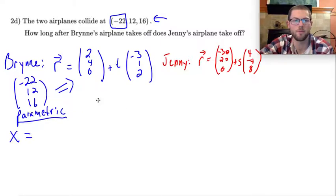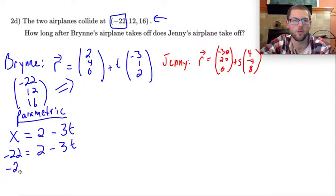In general, the x position is going to be given as 2 minus 3t for Bryn's airplane. I'm looking for when the x value equals negative 22. So negative 22 equals 2 minus 3t. If I solve for t, I get negative 24 equals negative 3t, or t equals 8 seconds.